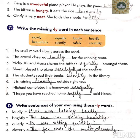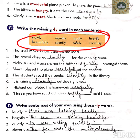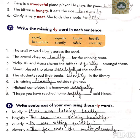Now coming to number C. Children, there are a few words given in the brown box — slowly, beautifully, equally, silently, loudly, safely, heavily, carefully. We need to write the missing LY words in each sentence. Read each sentence, understand its meaning, and then apply the correct LY word. Number one: the snail moved slowly across the sand.